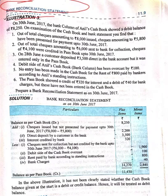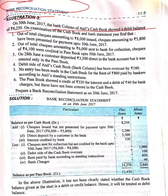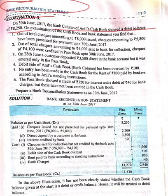Let us read out the illustration. The bank column of Anil's cash book showed a debit balance of 8,250. Debit balance as per cash book means balance as per cash book. In balance as per cash book, we have to do what the bank is doing — we copy the transactions that happened in the bank. If anything is being added in the bank, we add that; if anything is less, we subtract it.